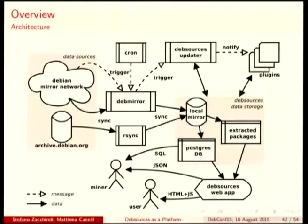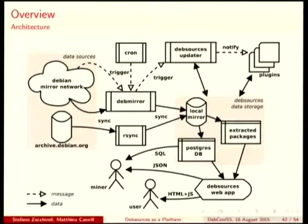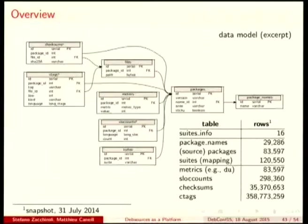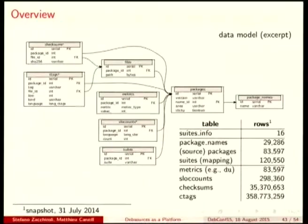This is a picture of the schema behind Debsources. You have access to the Debsources web app as a user, and as a miner you can access the web app through the API to get JSON results. You can also compute SQL directly on the DB if you talk to us, if you have some special request for interesting statistics. We do have a local mirror and a copy with all the extracted packages. This takes a lot of space as we'll see. From our PostgreSQL tables, you can see there is a lot of information — for instance, we have almost 400 million different ctags.